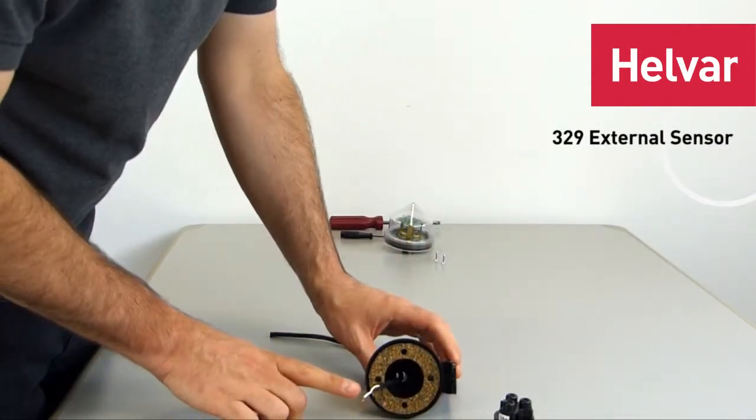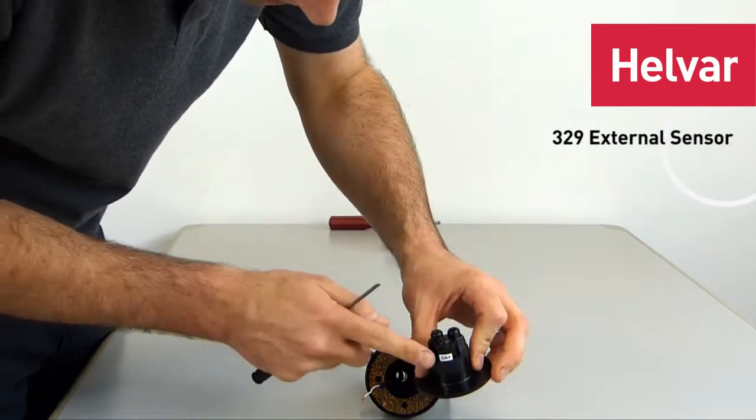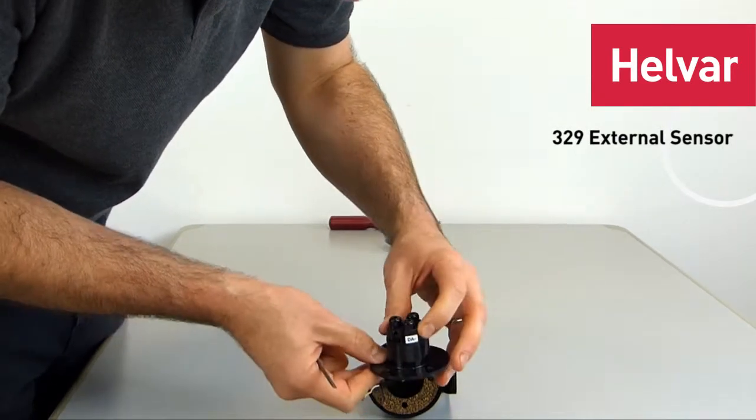Now we're going to attach the DALI wires to the socket assembly unit. You can see there's DALI plus there and DALI minus.